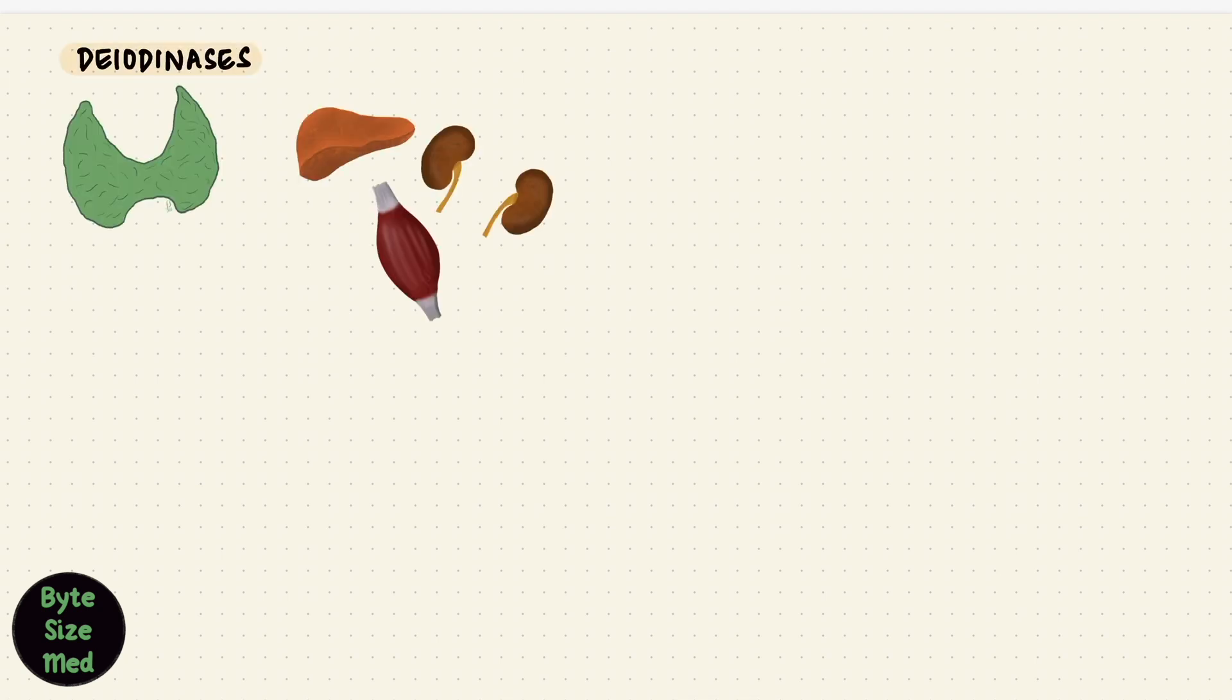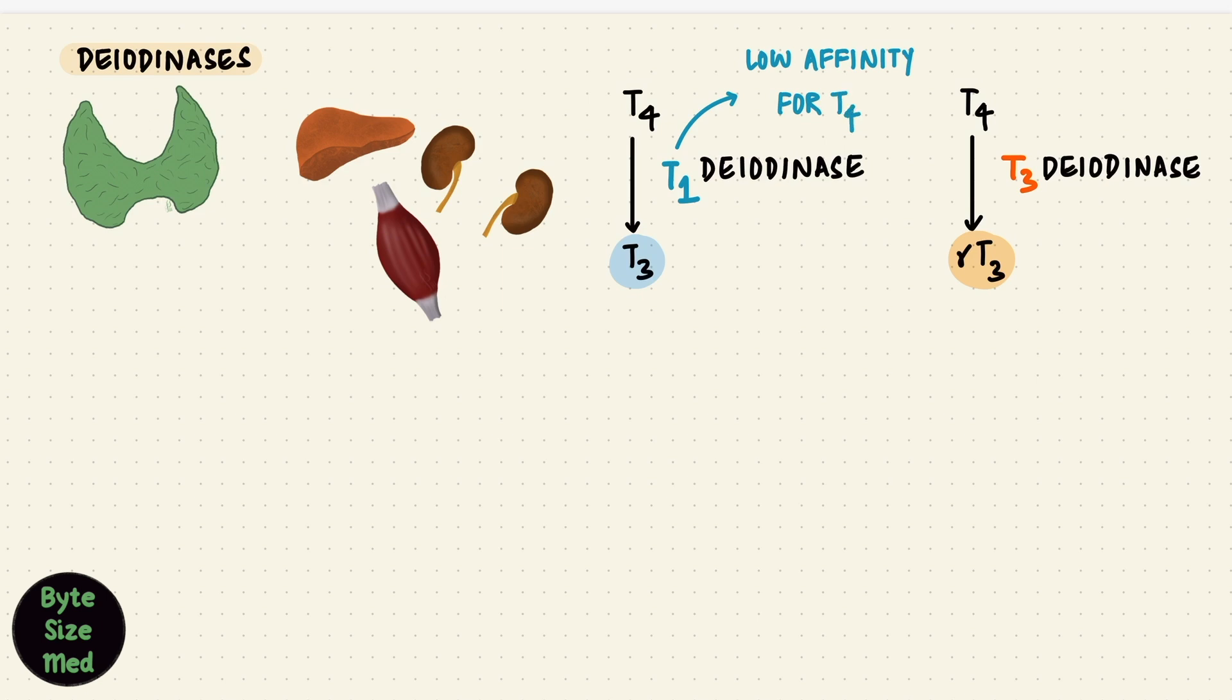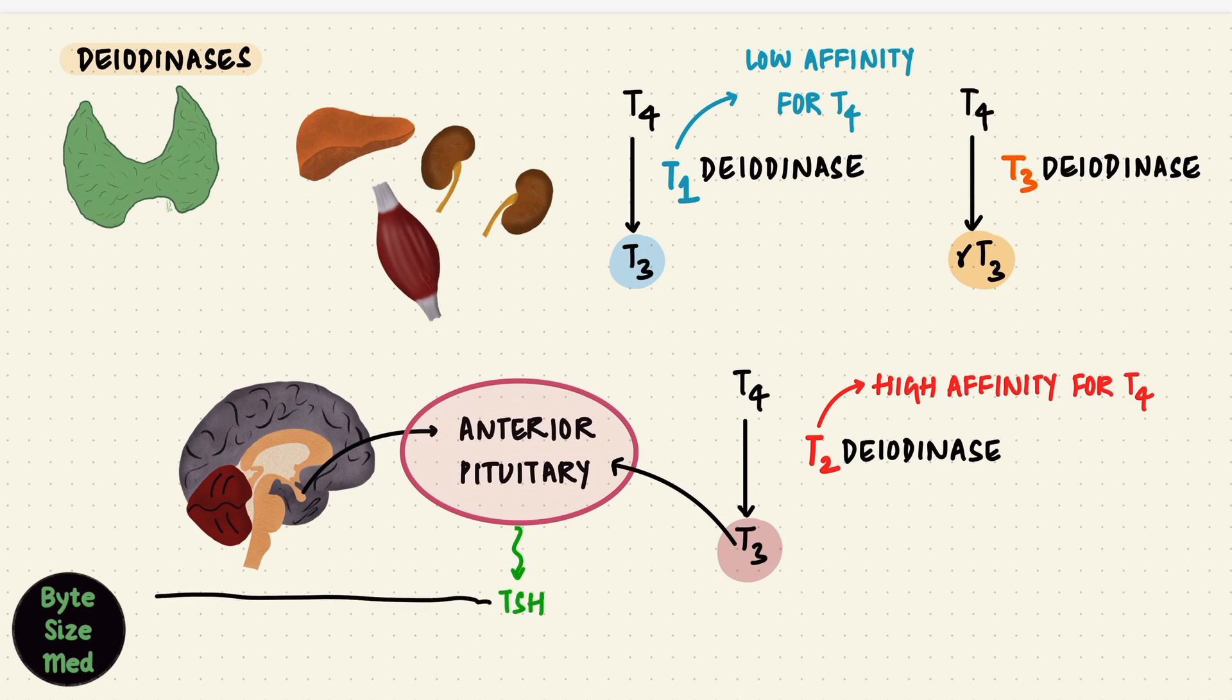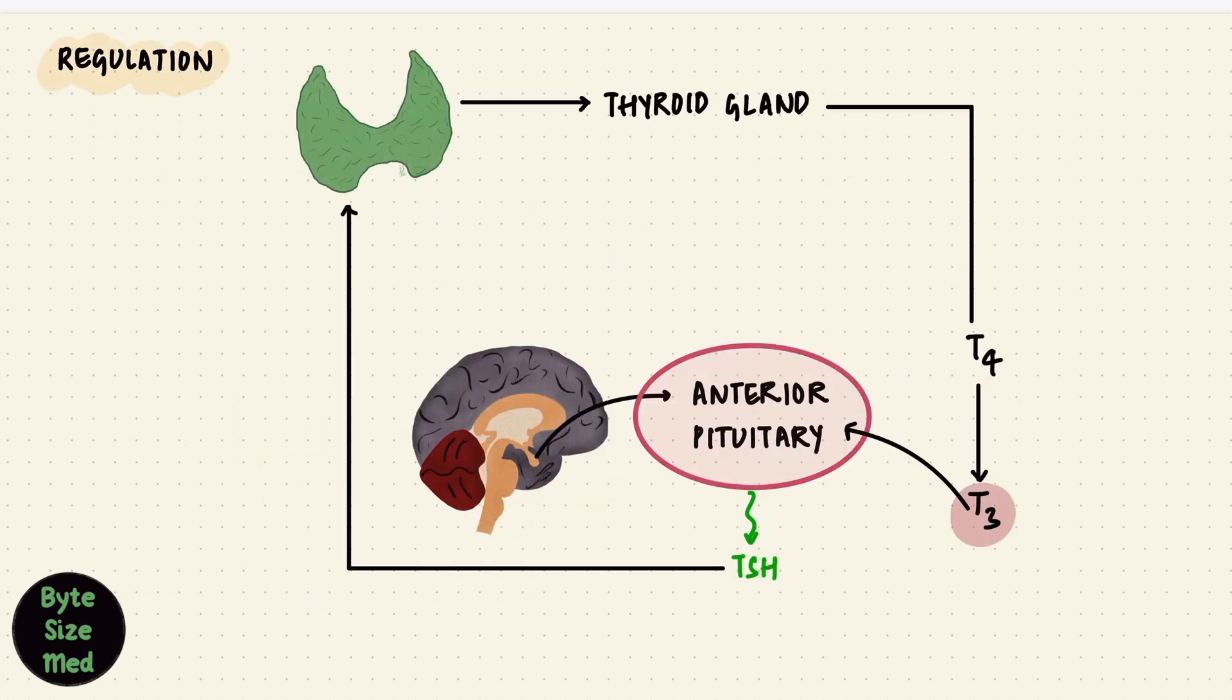That's two deiodinases. The important one converting T4 to active T3 is a type 1 deiodinase. The type 3 deiodinase is an inactivating one. It converts T4 to reverse T3 which is not biologically active. The type 1 deiodinase has a low affinity for T4, but in organs such as the anterior pituitary, there's another deiodinase, the type 2 deiodinase. Now this is a high affinity one. It can convert T4 locally, that means in the tissue itself, to T3. And that's important for regulation since sensing that T3 is how the anterior pituitary decides what to do with TSH. And it's that TSH that tells the thyroid gland what to do. This is important for regulation of the thyroid gland, which starts even higher than that, with a hypothalamus. And that's what we'll look at in part 4, where we put everything together with the hypothalamic pituitary-thyroid axis.